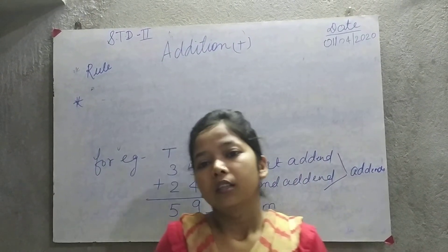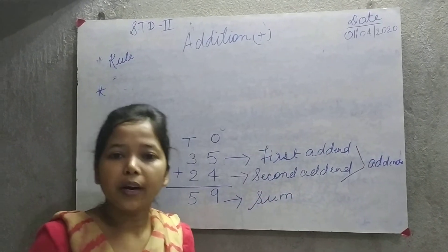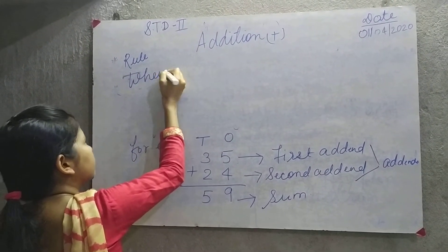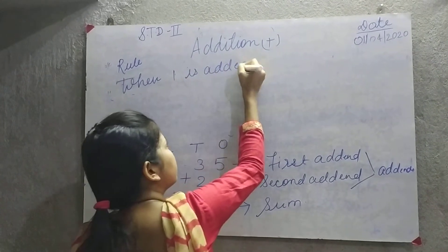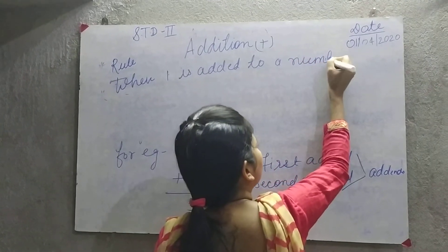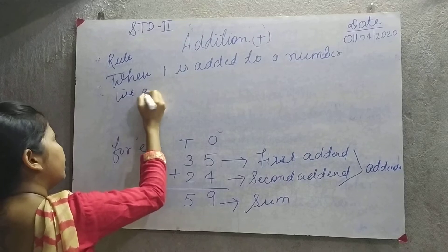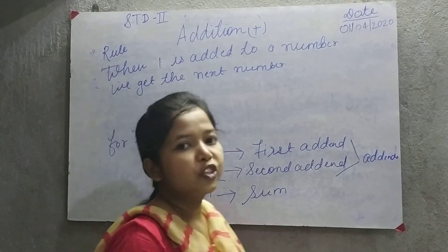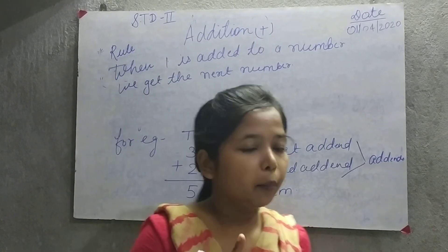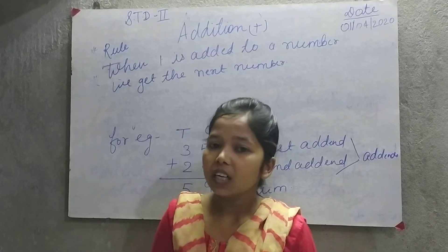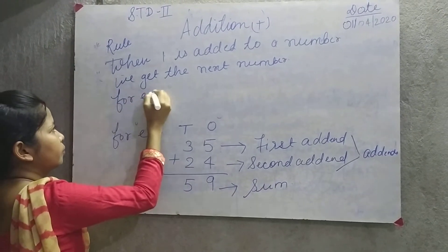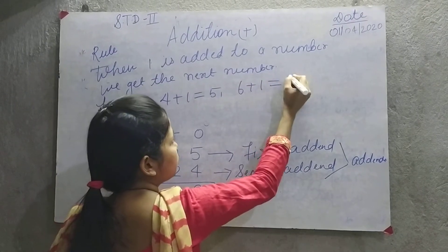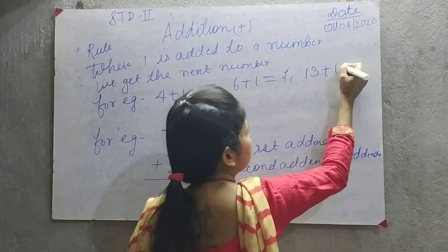The most important thing — remember rule one: when one is added to a number, we get the next number. For examples: four plus one is equal to five; six plus one is equal to seven; thirty plus one is equal to thirty-one.